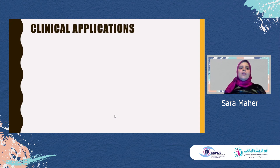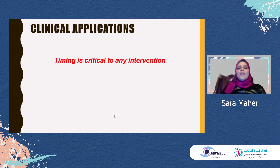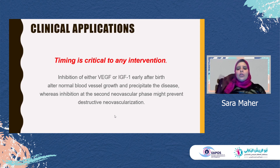After understanding the pathophysiology, we will show how it is applied clinically — the clinical applications of understanding the pathophysiology of ROP. The first important clinical application is timing. The timing is critical to any intervention. Inhibition of either VEGF or IGF-1 early after birth will alter normal blood vessel growth and precipitate the disease, whereas inhibition at the second neovascular phase might prevent the destructive neovascularization. So when to inhibit VEGF is critically important.